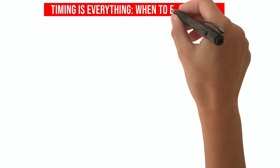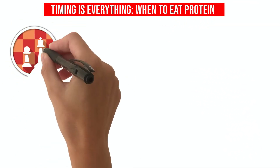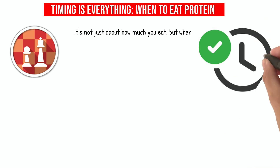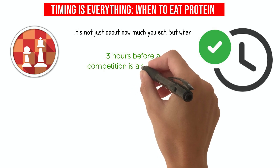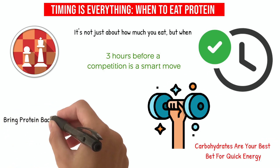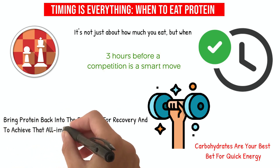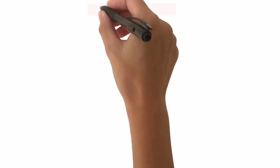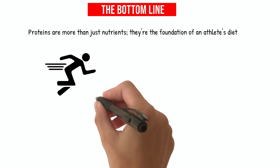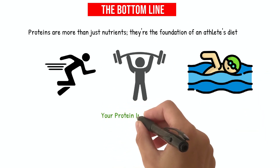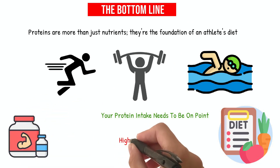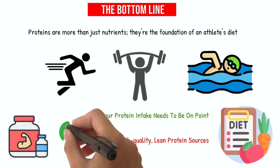Timing is everything: when to eat protein. For athletes, protein timing is like strategizing in a chess game — it's not just about how much you eat, but when. Protein takes its sweet time to digest, so consuming it about 3 hours before a competition is a smart move. During exercise, carbohydrates are your best bet for quick energy. But after the workout, bring protein back into the spotlight for recovery and to achieve that all-important nitrogen balance. Proteins are the foundation of an athlete's diet — whether you're sprinting, lifting, or swimming, your protein intake needs to be on point. Most diets can cover your protein needs, but if you're aiming higher, supplements can be your ally. Pick high-quality, lean protein sources and keep an eye on the timing.